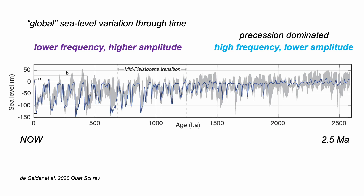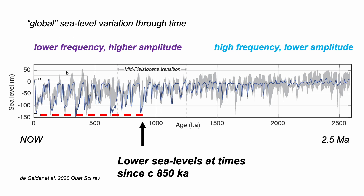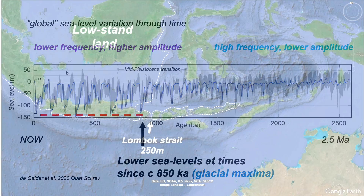This represents a change in the orbital controls on global temperature, and therefore sea level, from so-called precession — which is due to rotational wobble — to being chiefly controlled by obliquity of the Earth's rotation axis. This means that since the mid-Pleistocene, sea levels could fall much further, connecting many island groups, but still not enough to close the Lombok Strait.